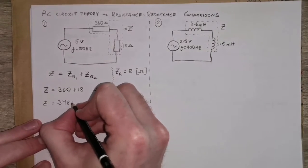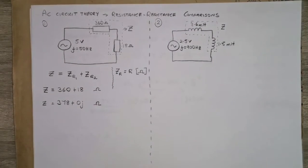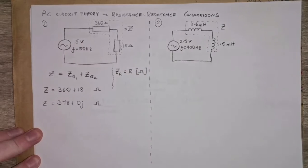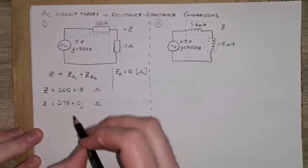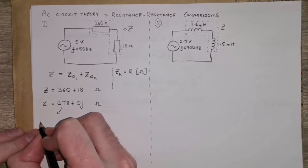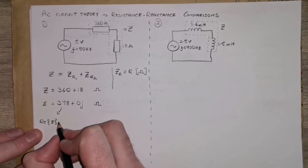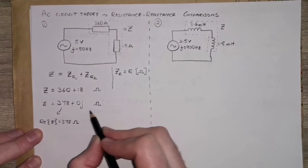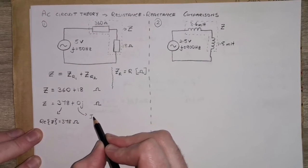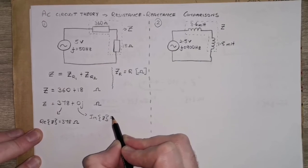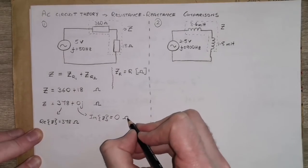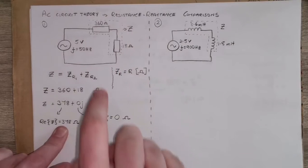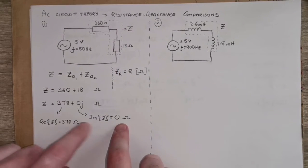I'm going to put in an extra bit here: 0 times j. We're dealing with AC circuit theory, so we've got complex numbers to worry about because we're dealing with phasors. We represent our impedances in Cartesian form, where the real part — in this case 378 ohms — represents the resistive part of the circuit, and the imaginary part represents the reactive element. This makes sense because in this circuit we only have two resistors, so it is all resistive and none of it is reactive.